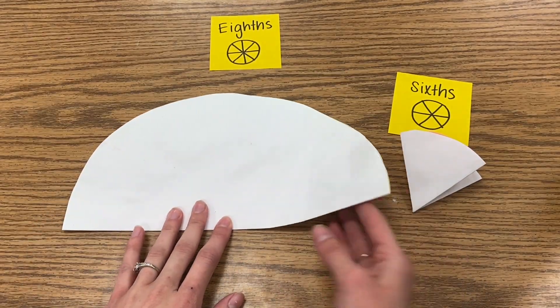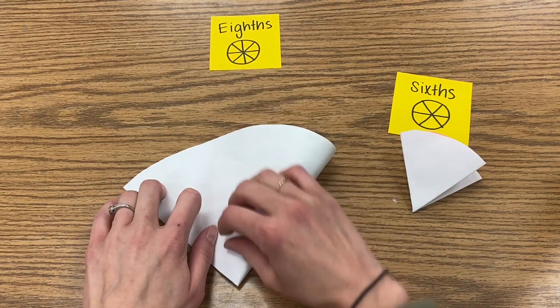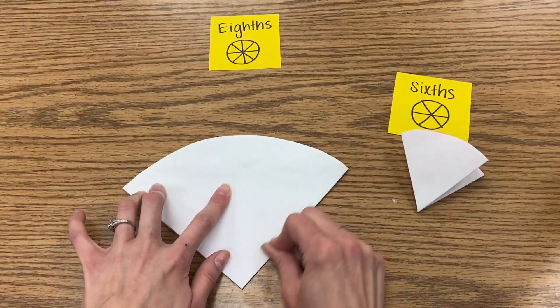Next we'll fold this in half again. So now I have fourths. I'm going to take my finger and really smooth out that crease to make it nice and flat.